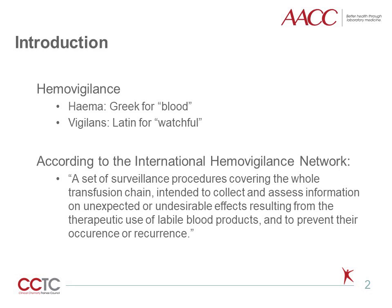The word hemovigilance is derived from the combination of the Greek word hema, or blood, and the Latin word vigilance, or watchful. Hemovigilance began in earnest in Japan in 1993 and France in 1994 as a reaction to the events that transpired in the 1980s and early 1990s, when HIV was first defined as a viral agent that could be transmitted by blood transfusion. The definition now used by the International Hemovigilance Network is: hemovigilance is a set of surveillance procedures covering the whole transfusion chain, intended to collect and assess information on unexpected or undesirable effects resulting from therapeutic use of labile blood products, and to prevent their occurrence or recurrence.